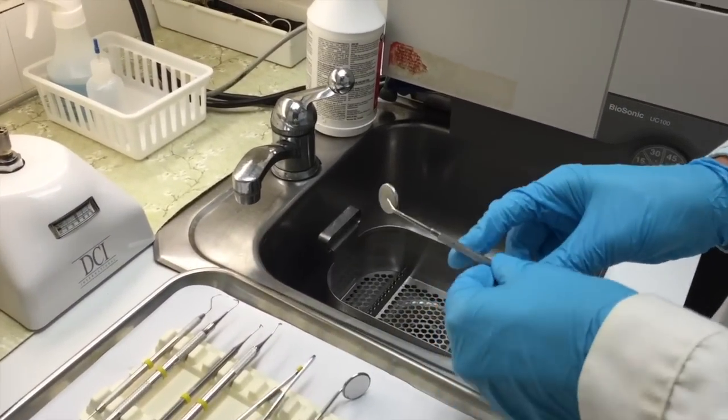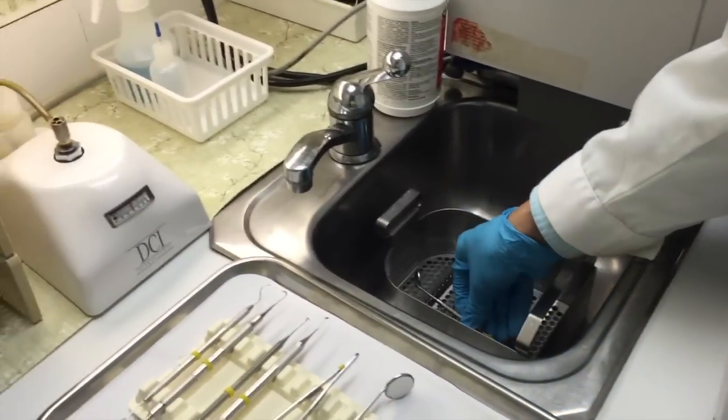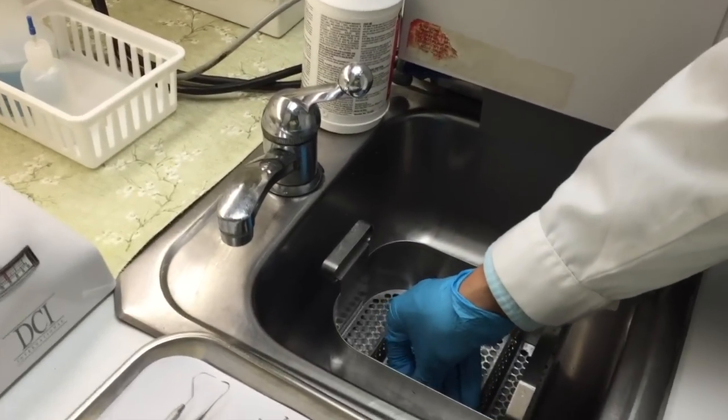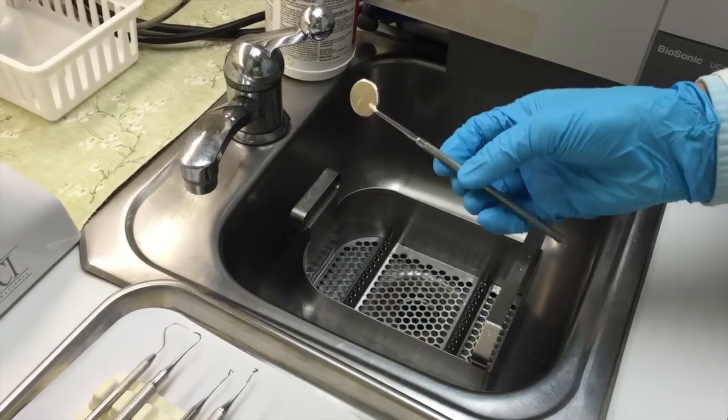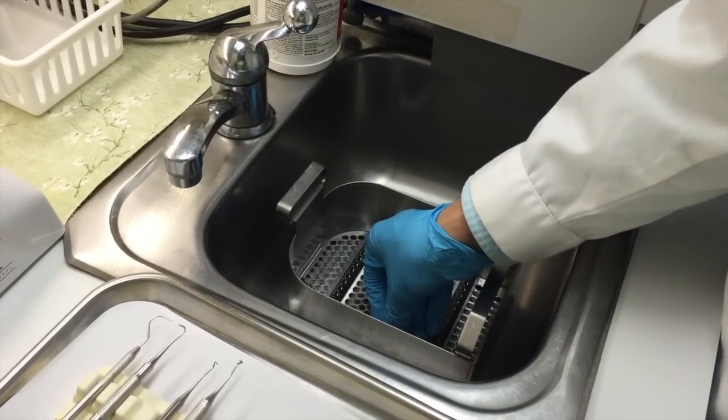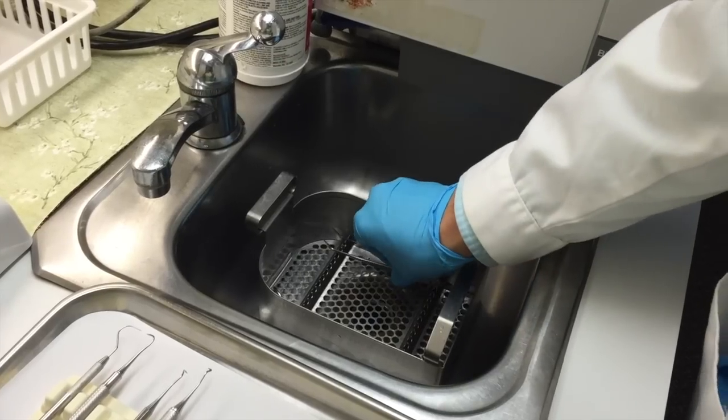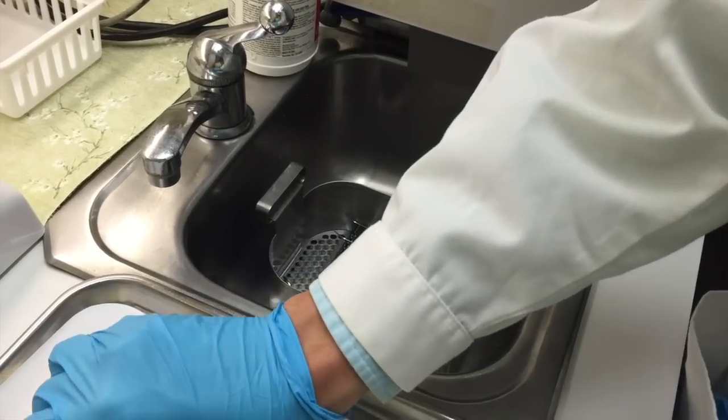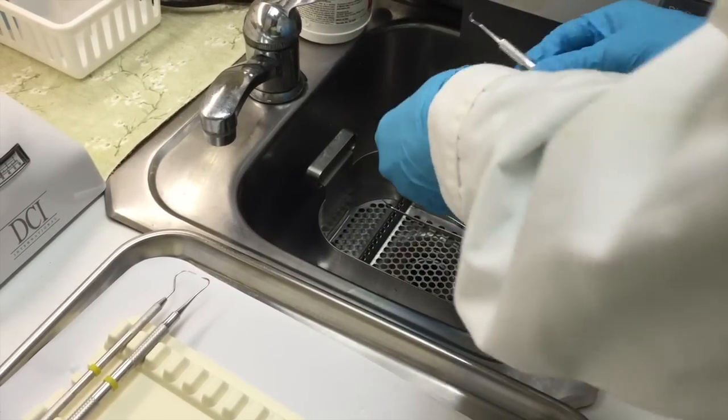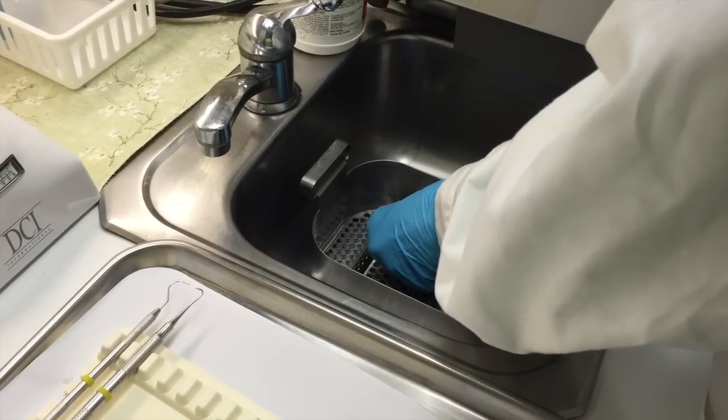The first thing we're going to do is put the mirrors in, because you have to be careful with these as to not scratch them. You're going to need to put them on one side of the basket facing the same direction so that when they're running through the ultrasonic cleaner, they don't scratch the surface of each other. Then you're going to put all of your other hand instruments on the other side of the basket, because these are sharp and could also scratch the mirrors.